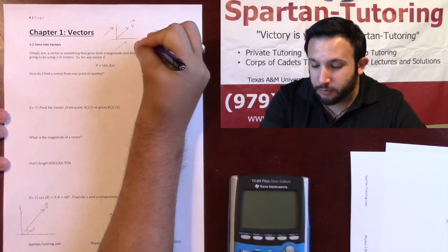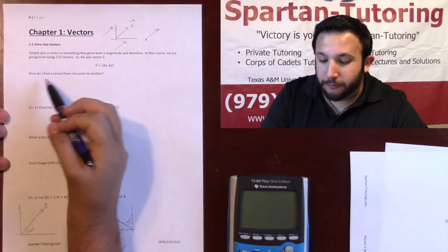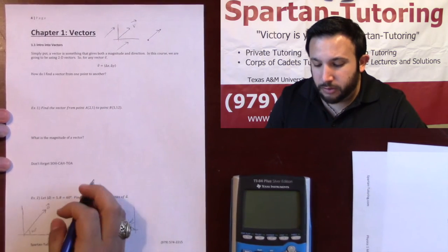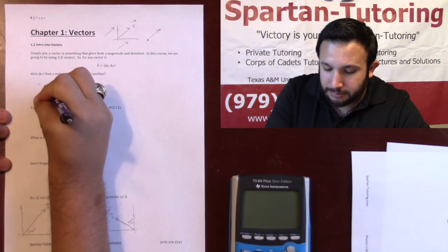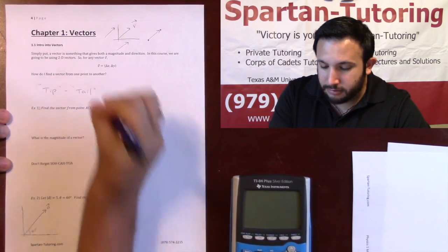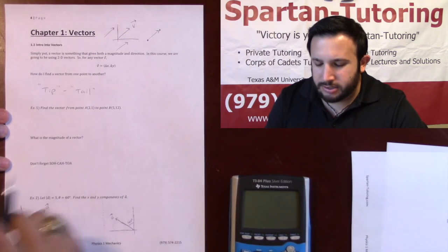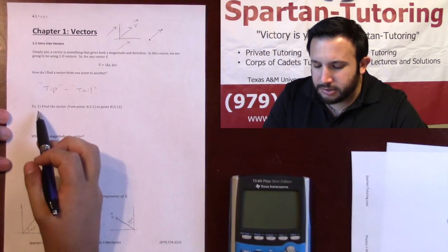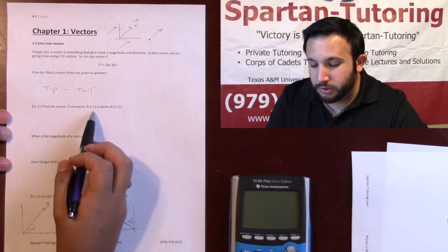How do I find a vector given two points? If I have one point here and one point here, how do I find a vector from one point to another? What I want you to think about is: tip minus tail. That's the way I remember it — tip minus tail — and I'll talk about what that means.